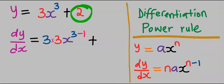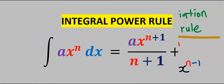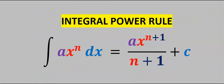When you differentiate a constant it is 0, hence we can leave it out, and our dy/dx becomes 9x squared.